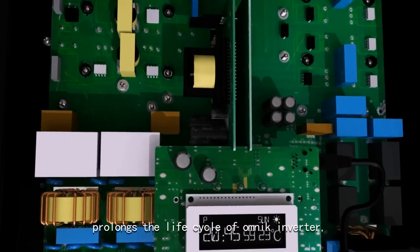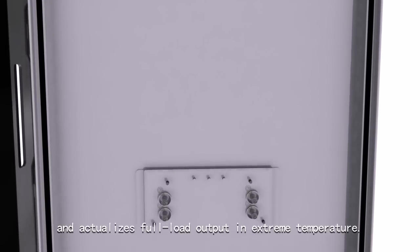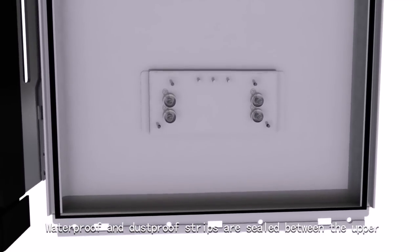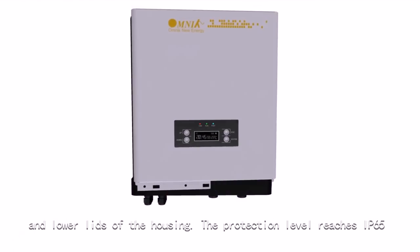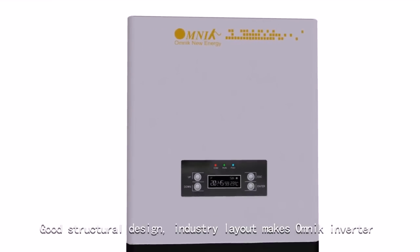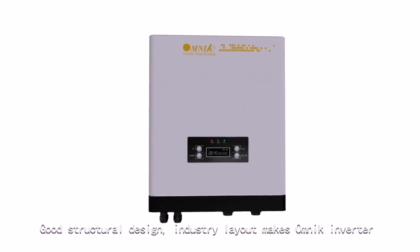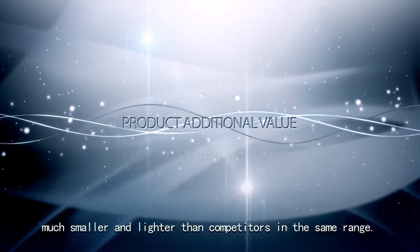Waterproof and dustproof strips are sealed between the upper and lower lids of the housing. The protection level reaches IP65. Good structural design and industrial layout make the Omnic inverter much smaller and lighter than competitors in the same range.